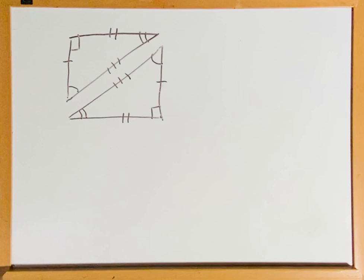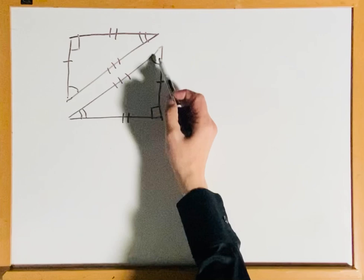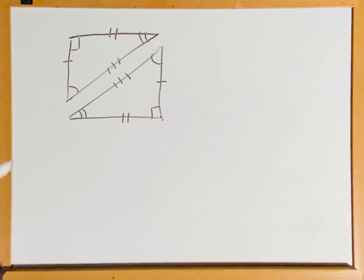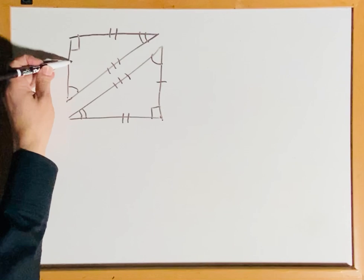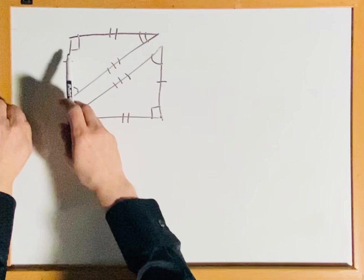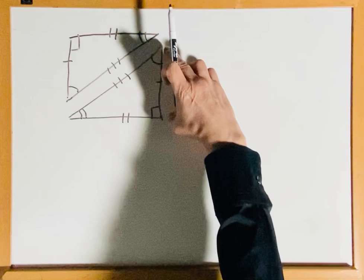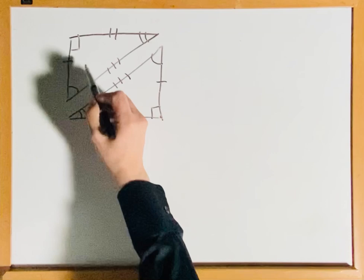Here we have the problem set-up. The triangles are congruent. You see this side — we have a line here, and in the other triangle we have this side with one line here. That means that these two sides are going to be corresponding, and these two sides of the triangle are going to be congruent.